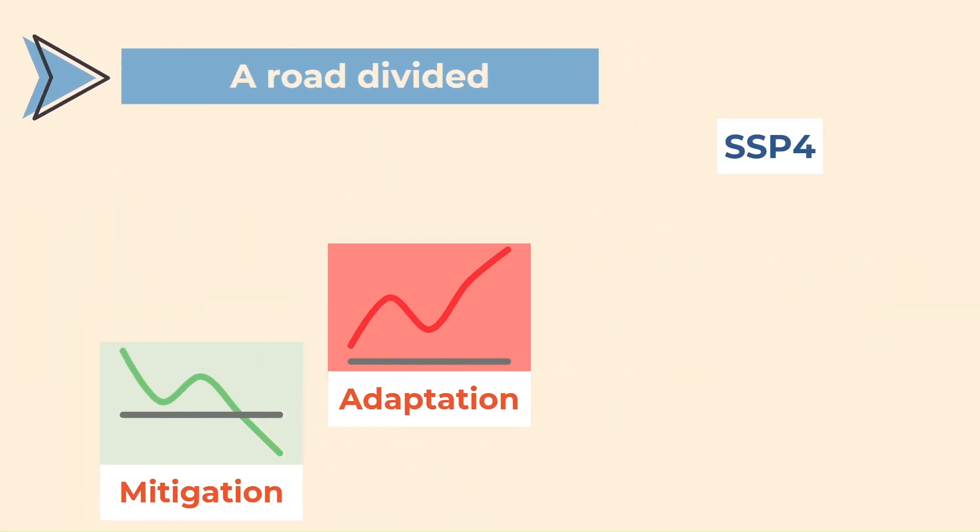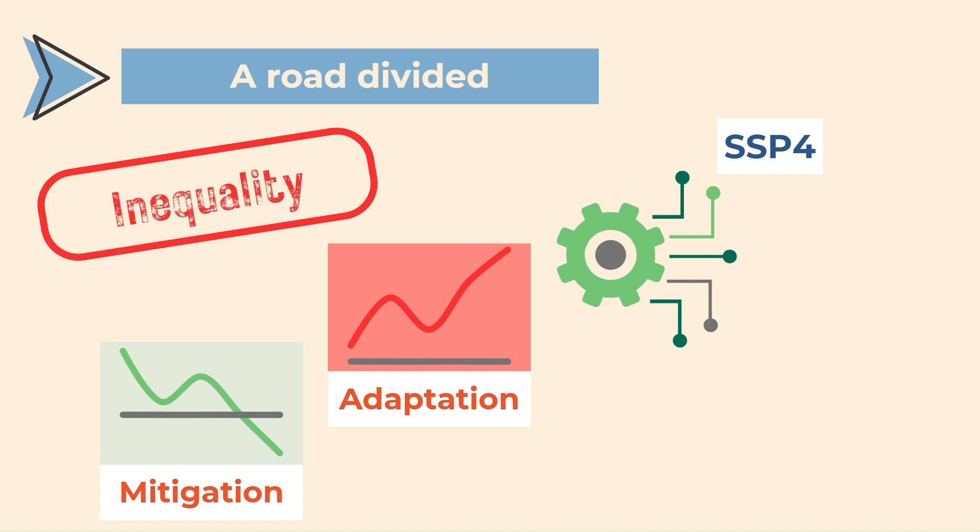SSP4, or a road divided, is based on inequality. In this scenario, the mitigation challenges are low, thanks to the development of new technologies, but the adaptation challenges are high, because this development is occurring at the expense of an improvement in inequalities.